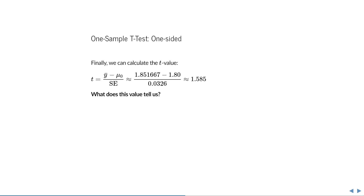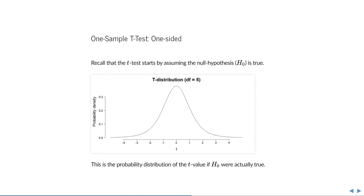But what does this value tell us? Recall that the t-test starts by assuming that the null hypothesis is actually true, but even if the null hypothesis is true, it only counts for the population. In other words, if we assume that men are on average 1.8 meters, then even if that is true in the population, when we draw a sample, we will observe a small difference in the sample mean. So here is the probability distribution of t-values if the null hypothesis were actually true.